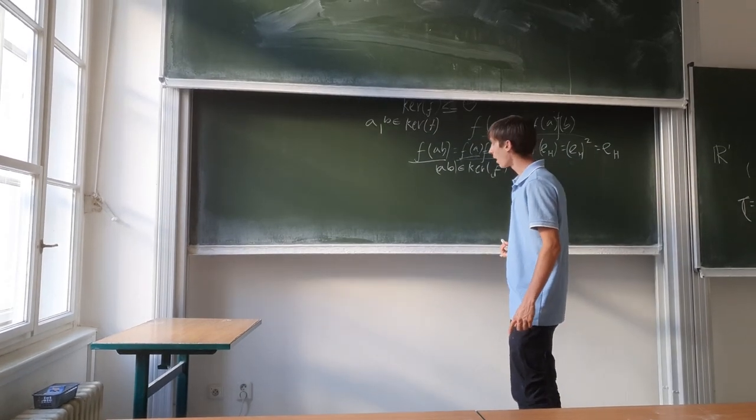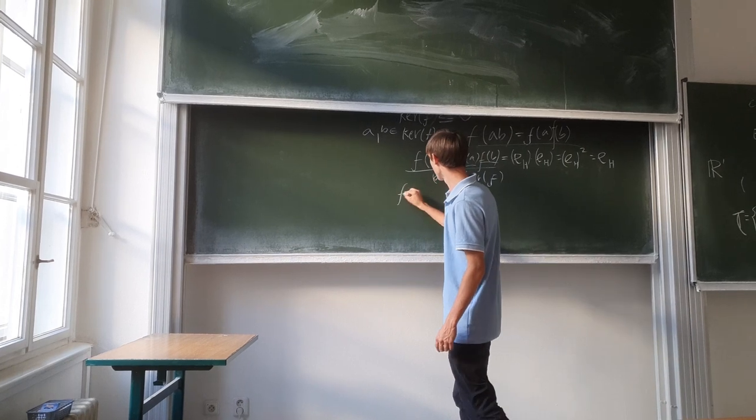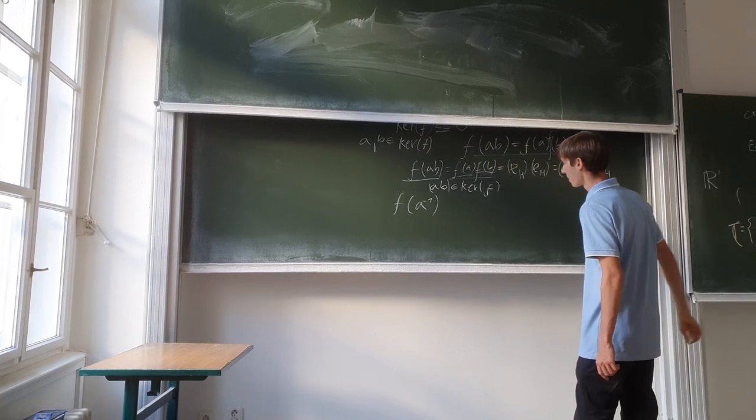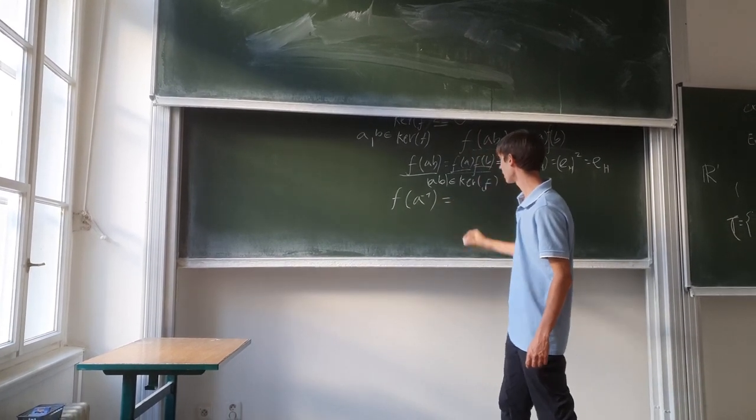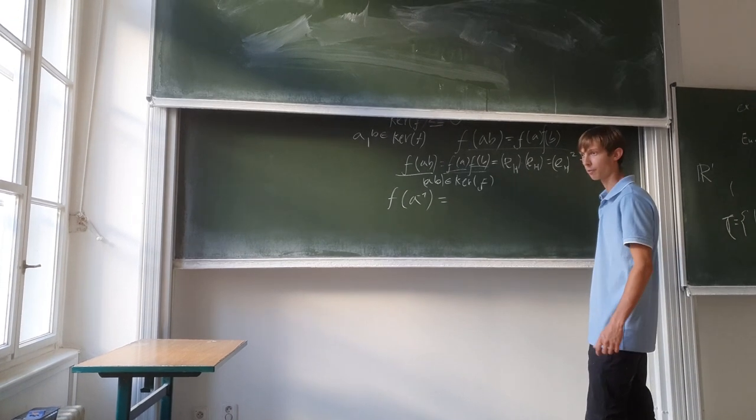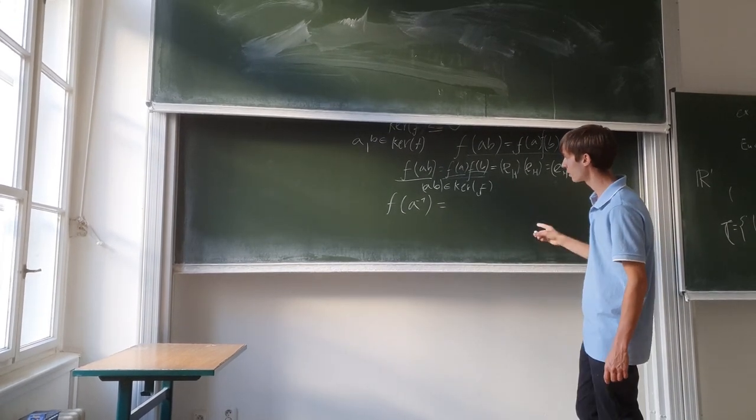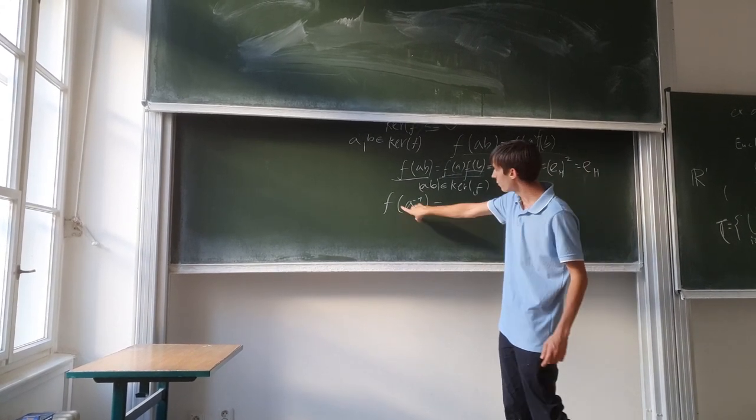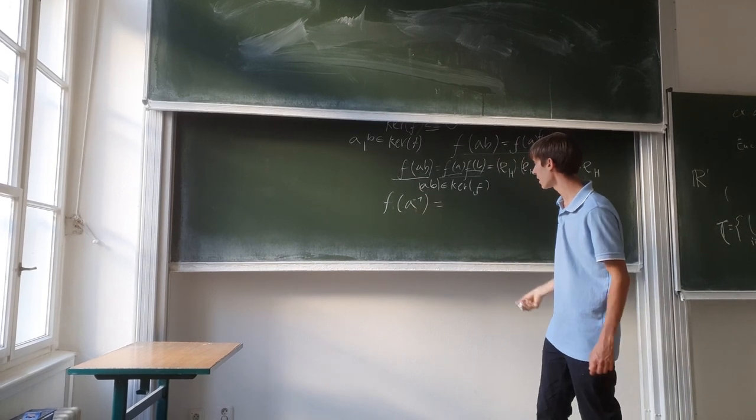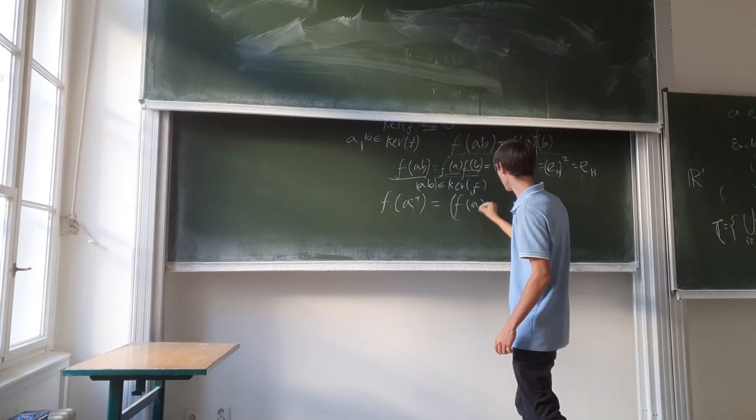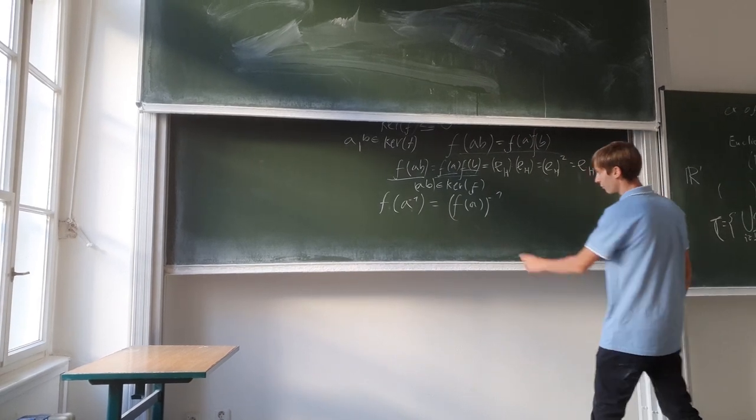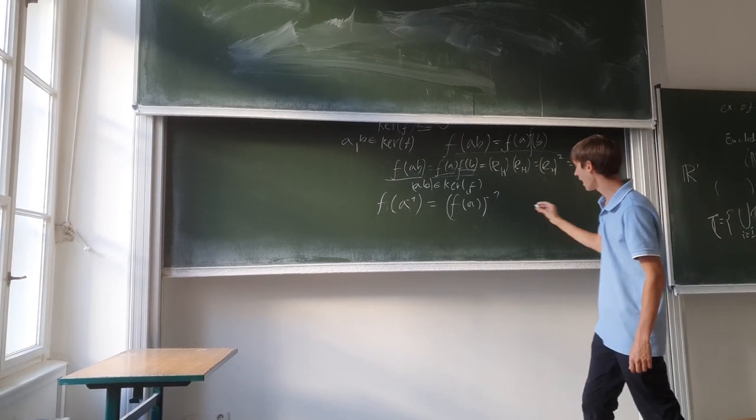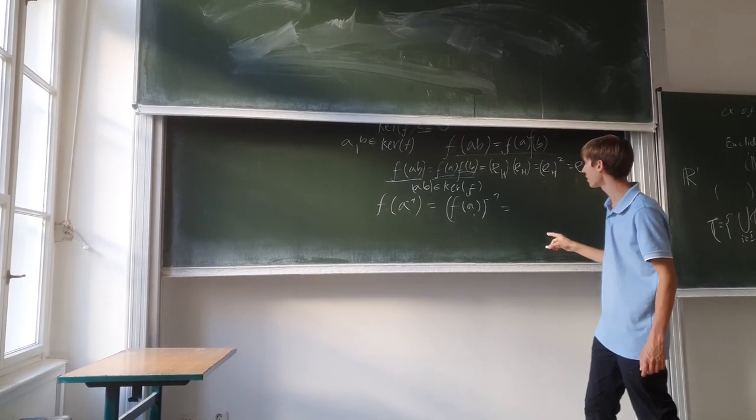Another part, a shorter one, is if f of the inverse of element a is also inside kernel f. What we have to use is an interesting manipulation where f(a^-1) is the same as (f(a))^-1. Take f(a), get the result, and then get the inverse element of that. f(a) we know must be the identity element.